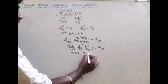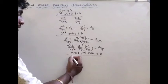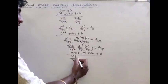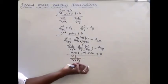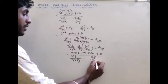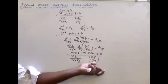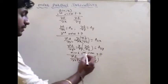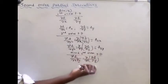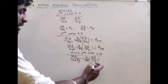This is the second-order partial derivative. This is the mixed second-order partial derivative. The notation is dou square f by dou x dou y. The meaning is: first with respect to y, take the partial derivative, then with respect to x, take the partial derivative.